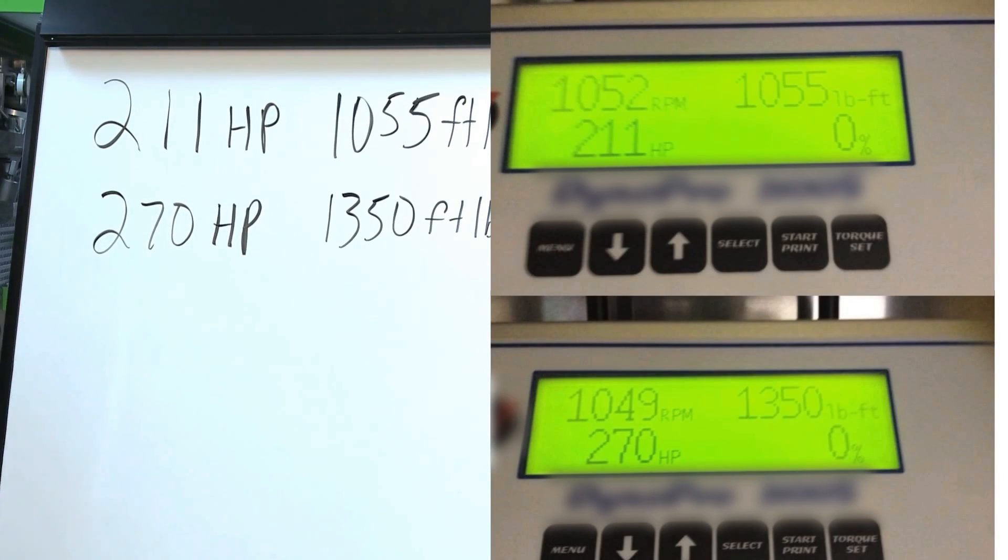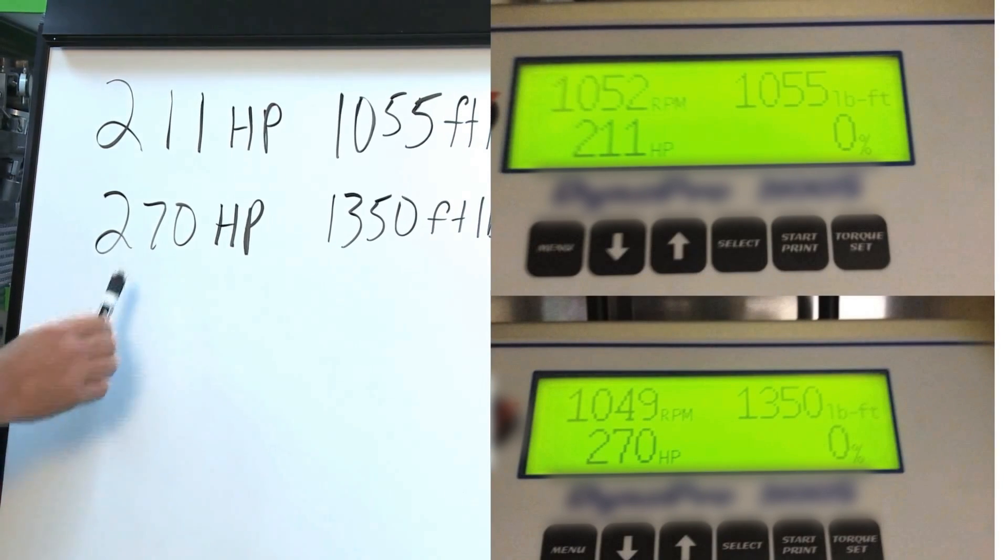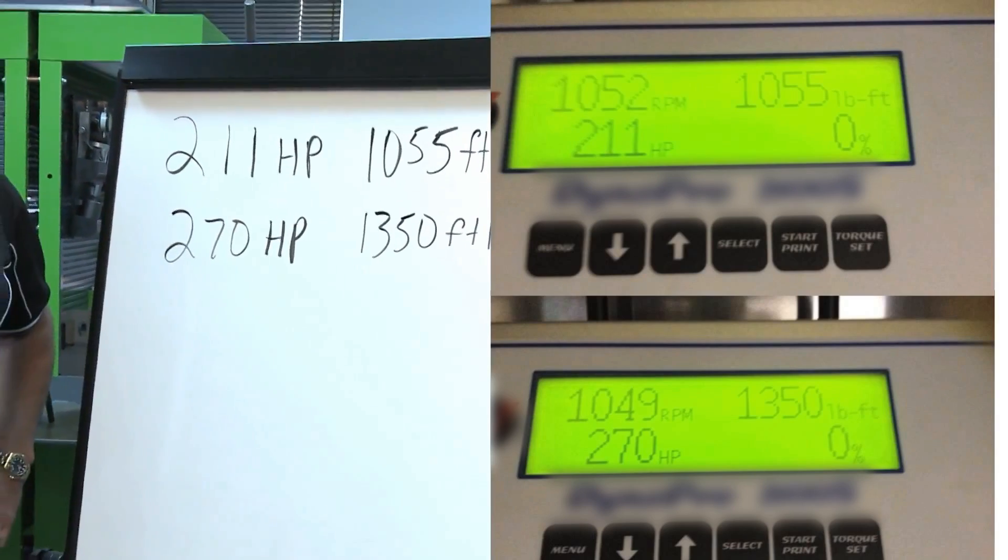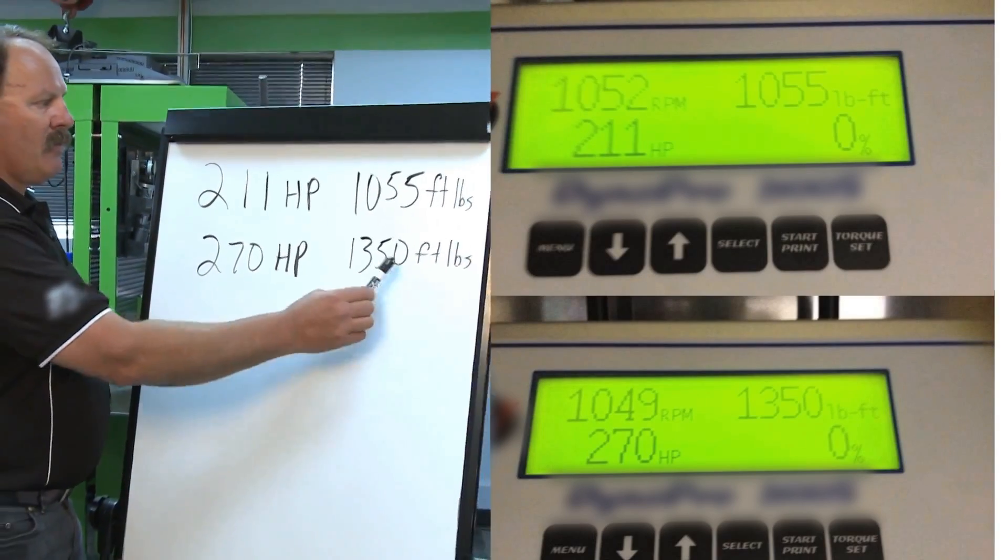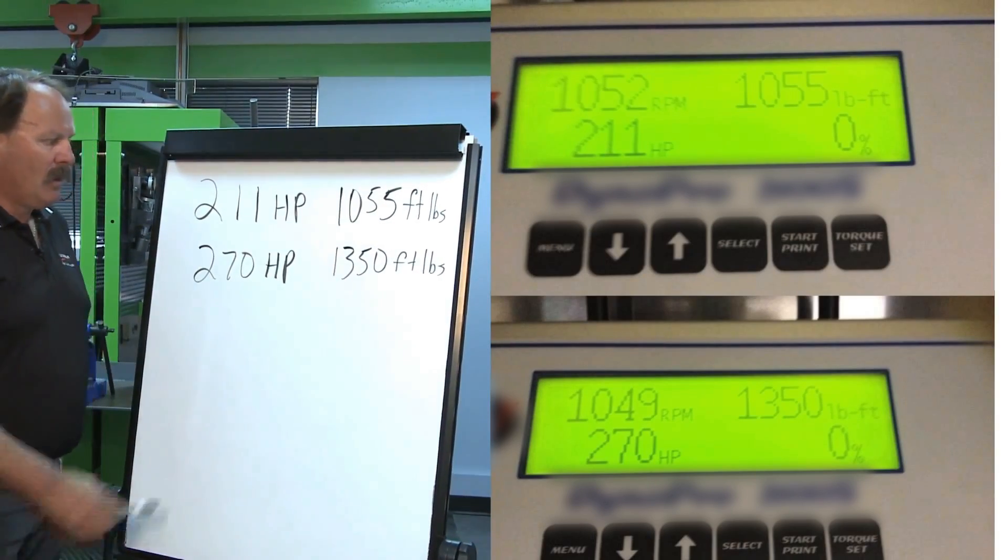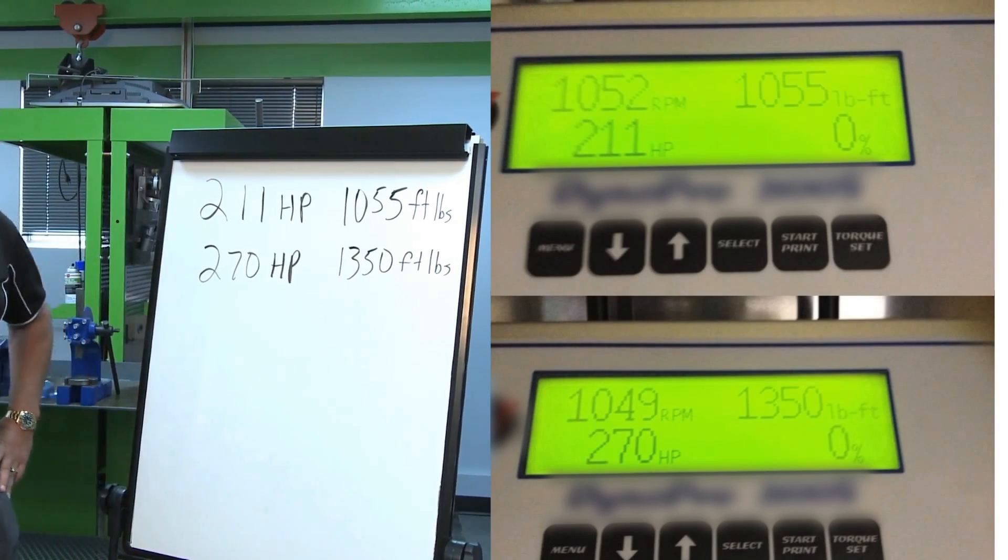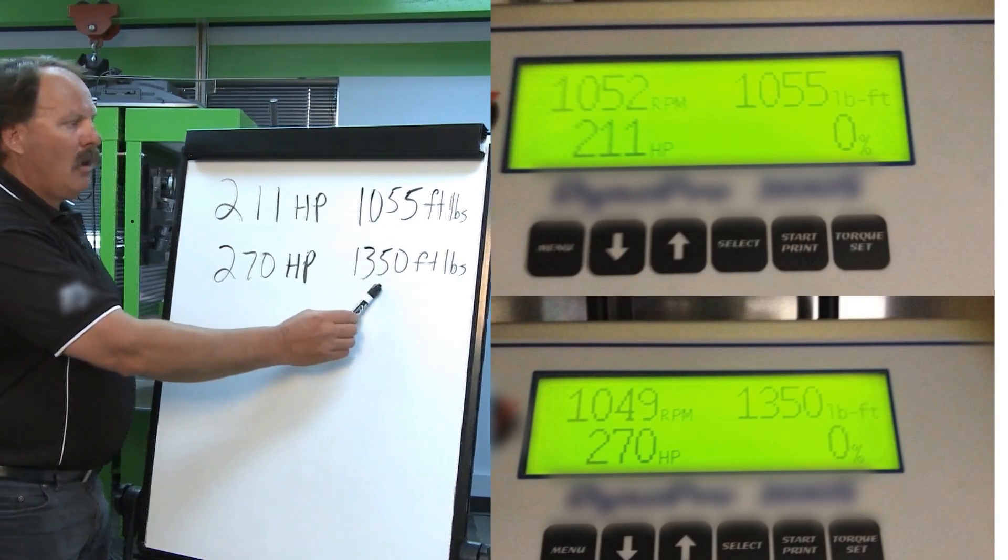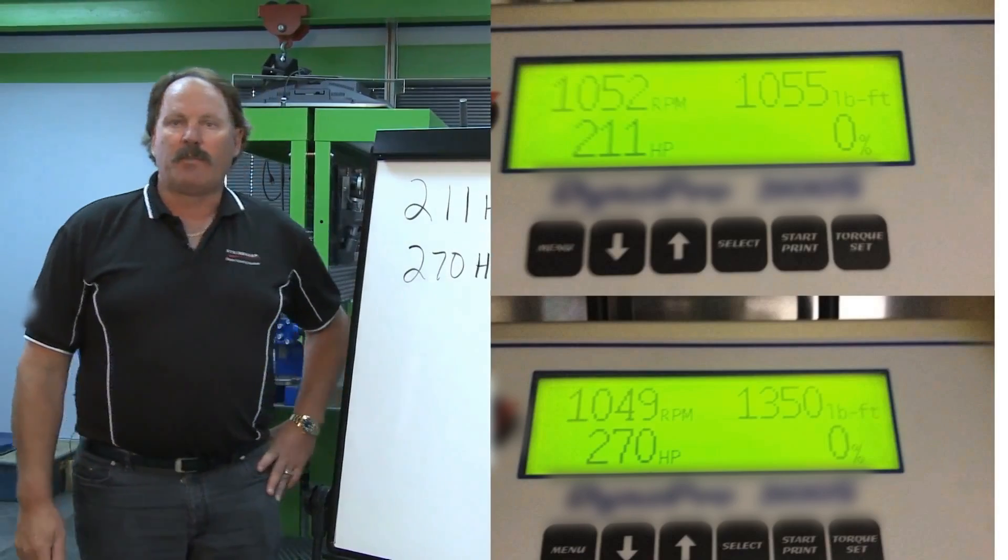After the Steinbauer module was installed, we got 270 PTO horsepower out of that tractor and 1,350 foot-pounds of torque. 59 more horsepower, but more importantly, almost 300 foot-pounds of torque more.